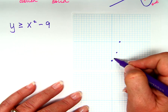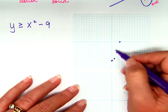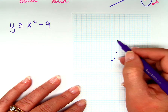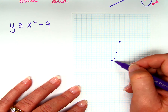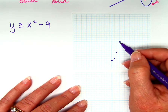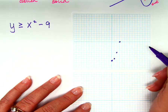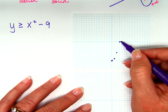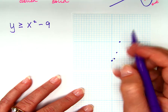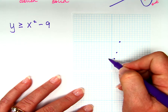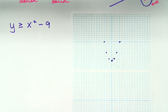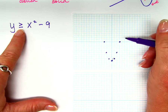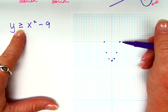Here's the deal — from the vertex, if I go over 1 up 1, over 2 up 4, and over 3 up 9, I know those are in the correct place. And I don't just know those points — because the parabola is symmetric, I also know the mirror points on the other side. Now, what kind of line do I draw here? A solid line, because it's greater than or equal to.